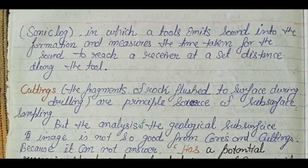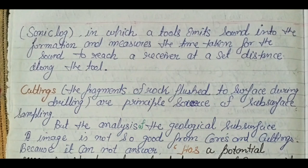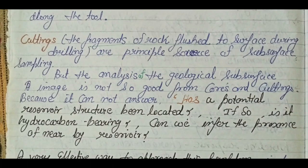Now, what are cuttings and corings? These are fragments of rock flushed to the surface during drilling, and they are the principal source of subsurface sampling. However, cuttings and corings do not give a good image of the geological subsurface. They cannot tell you where a potential reservoir is located, whether it contains hydrocarbons, or what nearby reservoirs look like. A detailed analysis is required — and that is what well logging provides.